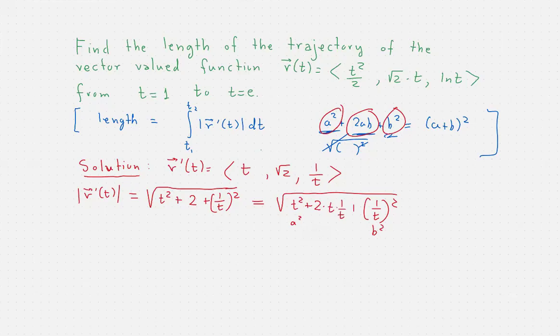So this will be the square root of t plus 1 over t all squared, which simplifies to t plus 1 over t. And now the integral is certainly doable.